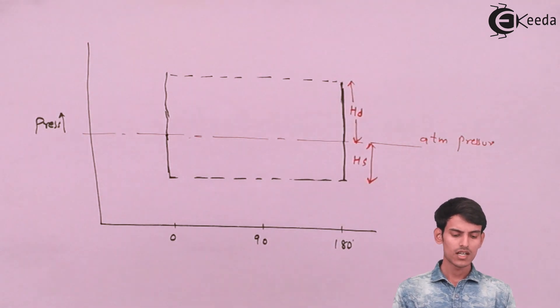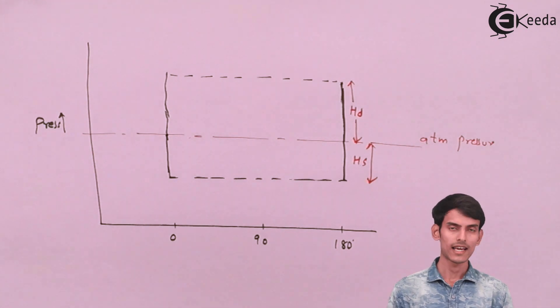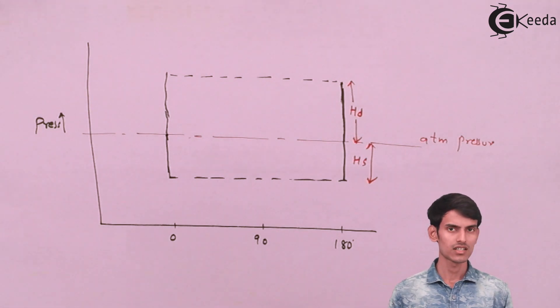Up till now what I have drawn is an ideal indicator diagram without showing any effect of the acceleration head. Now if I include the effect of acceleration head in this diagram, it will look something like this.